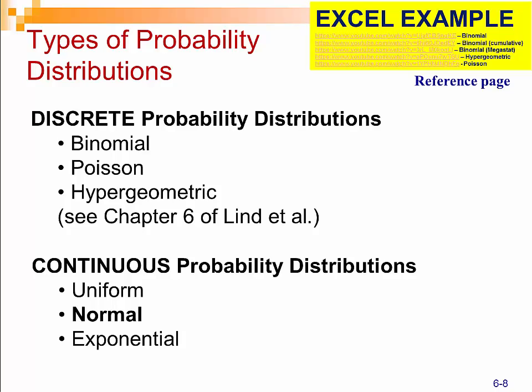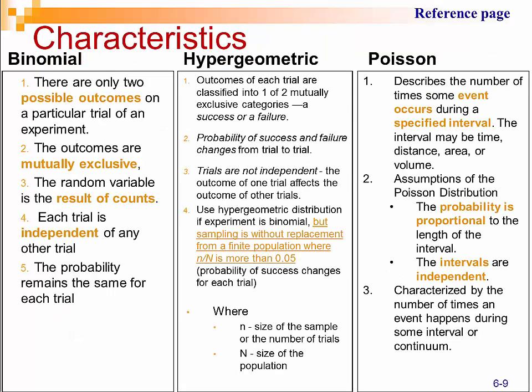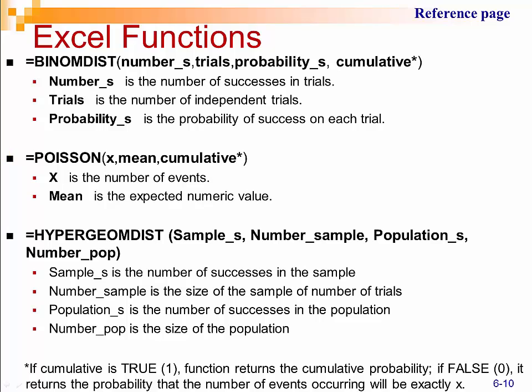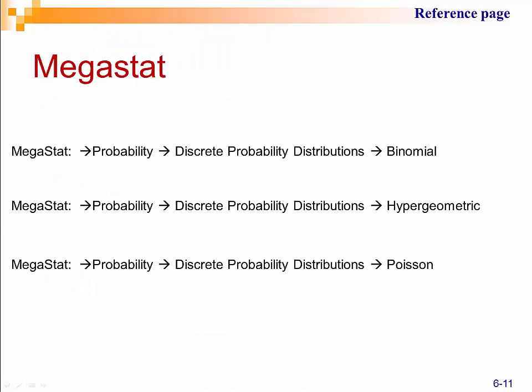The next two pages are reference pages of instructions for the Excel and Megastat functions for the three discrete probability distributions. I'm also providing you with a reference page with the characteristics of the discrete probability distributions all on one page. Here are the Excel functions and how you would calculate out these different discrete probability distributions. Megastat makes it a little bit simpler and more straightforward. You'll be happy to know we only have two more slides to go in this chapter.